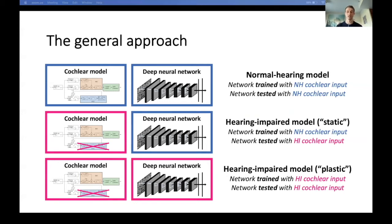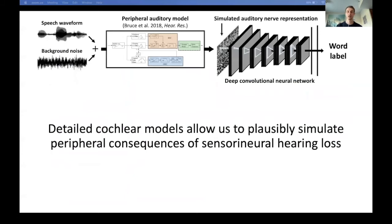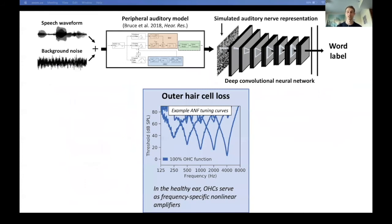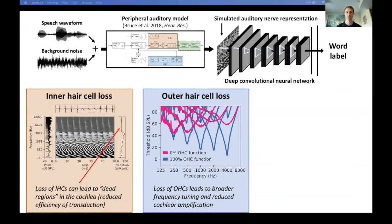Cochlear damage may result in a periphery that is inherently less well suited for conveying speech information. Alternatively, if the plastic model looks normal and only the static model exhibits hearing impaired behavior, it could suggest that a lack of plasticity following cochlear damage contributes to the behavioral deficits. Our model can plausibly simulate many different modes of sensorineural hearing loss. For instance, we can disable the outer hair cells, which contribute to the healthy ear's sharp frequency tuning and sensitivity to quiet sounds, leading to broader frequency tuning and reduced cochlear amplification. We can also simulate inner hair cell loss, producing dead regions along the cochlea's frequency axis where the ear loses sensitivity to particular frequencies.